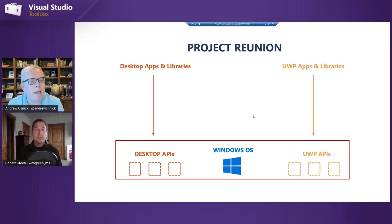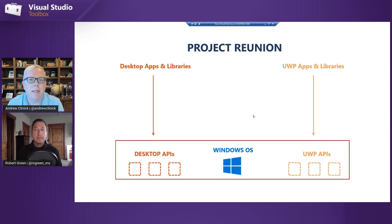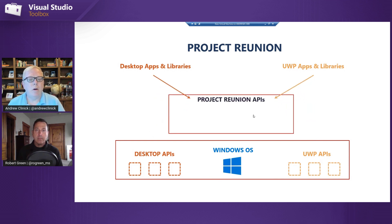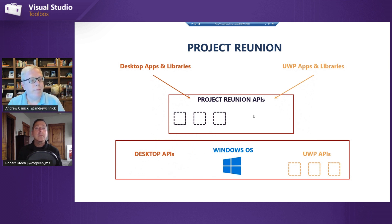When you build an application, we always think about the UI, but developers tell us the UI code is maybe 20–30% of their app. A lot of the app is making everything work and providing platform functionality. So we want to ensure that we bring all those APIs to you — the UI, but also the platform APIs. The Reunion goal is to bring those desktop APIs up and decouple them from the OS.